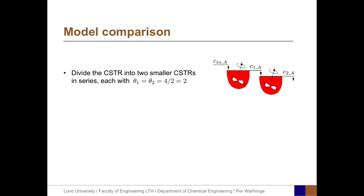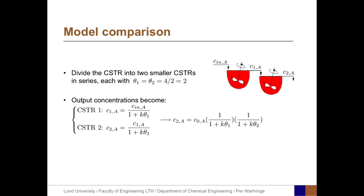Let's divide the big CSTR with a residence time of 4 into two smaller CSTRs in series, each with theta equals 4 divided by 2 equals 2, so the total volume of the system is constant. We then get two equations, one for CSTR1 and one for CSTR2. The output concentration from the first reactor is the input concentration divided by 1 plus K*theta1. The second reactor has the output from reactor 1 as input, and the output concentration from the second reactor is C1A divided by 1 plus K*theta.